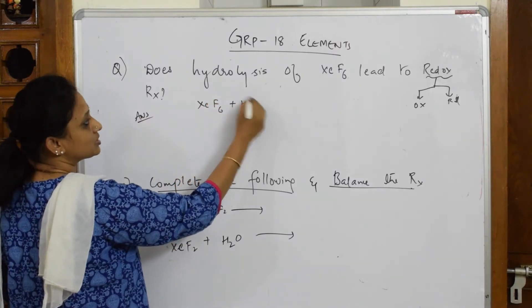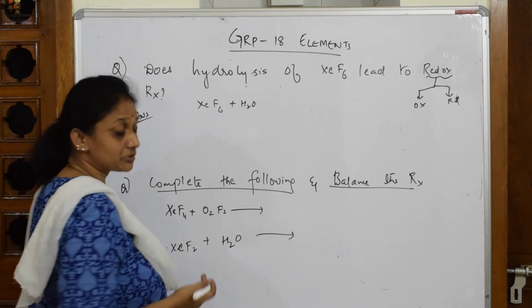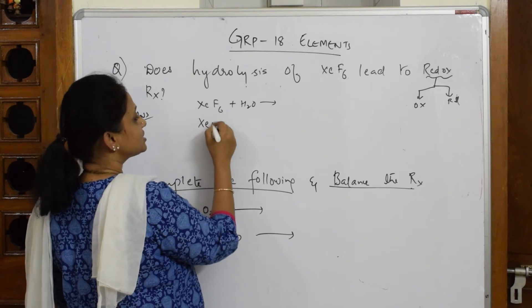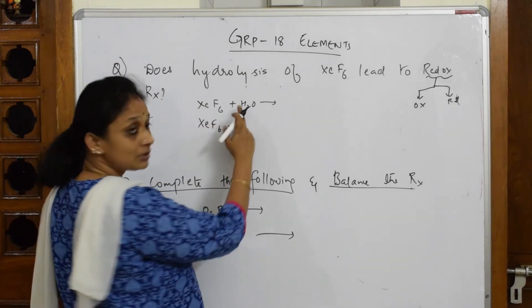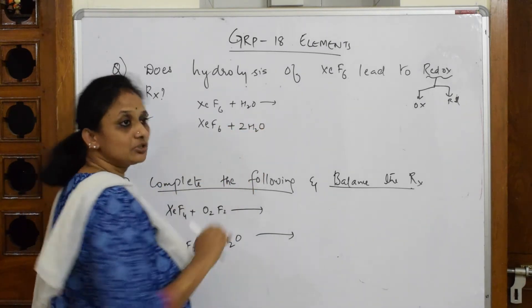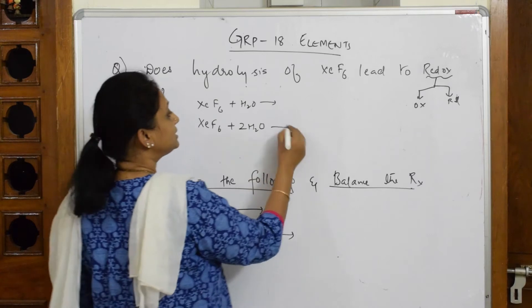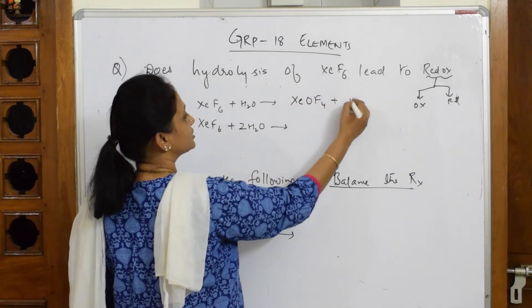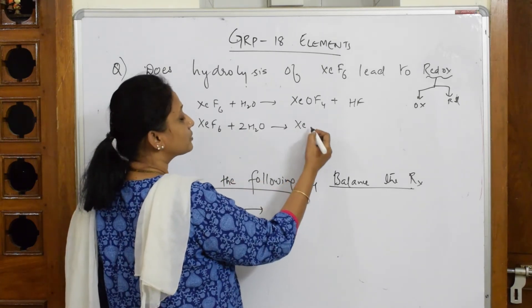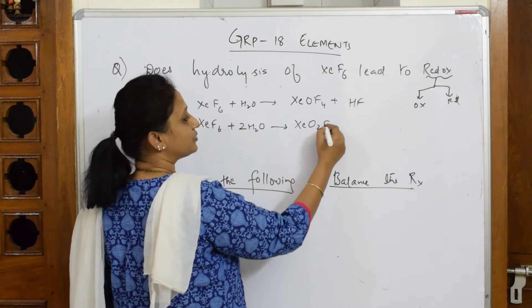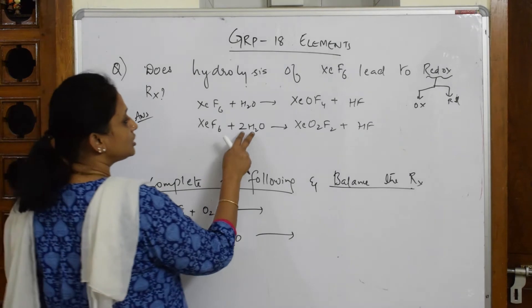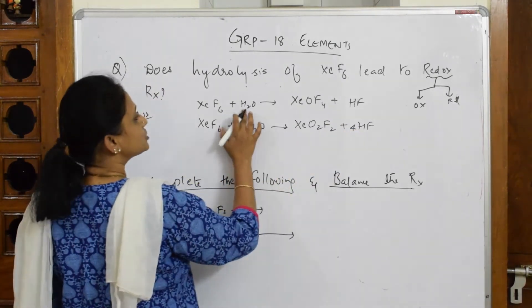XeF6 when it combines with water - they asked me hydrolysis so I'm showing you hydrolysis products. XeF6 combining with one water molecule, and XeF6 combining with two water molecules. When it combines with one water molecule, the product formed is XeOF4 plus HF. When you combine with two water molecules, you're going to form XeO2F2 plus 4HF.